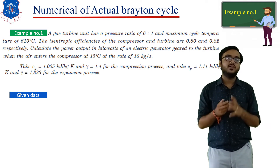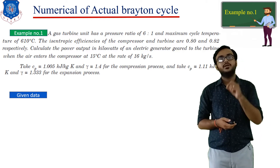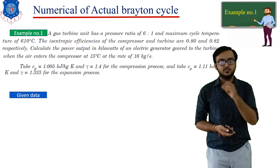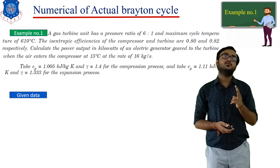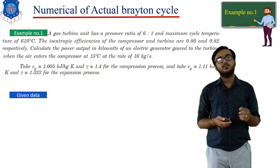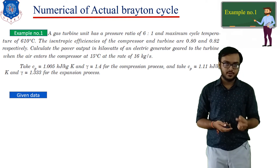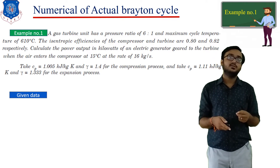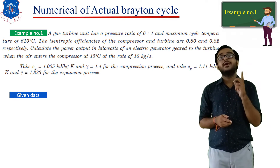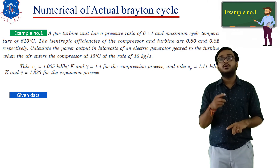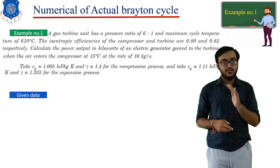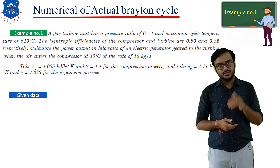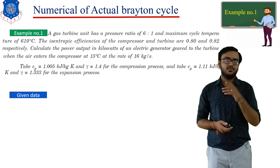To solve this type of example, first you need to plot the T-S diagram. Then, second step, you need to find all the temperatures: T1, T2, T3, and T4. In addition, since we are dealing with the actual cycle, you need to find two extra temperatures — T2 dash and T4 dash. Then you are able to calculate the rest of the parameters like power, work, and efficiency.